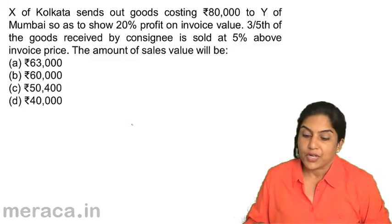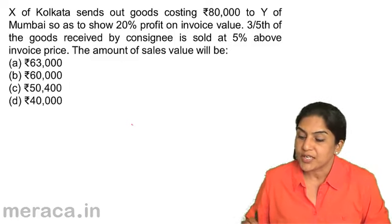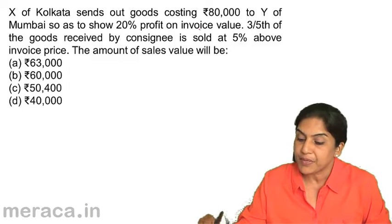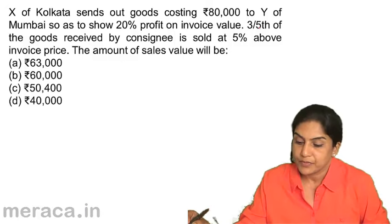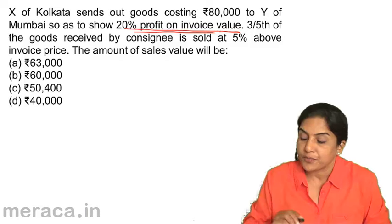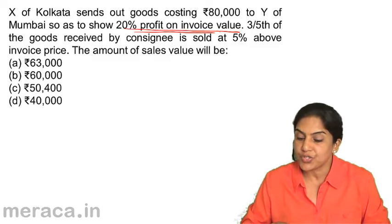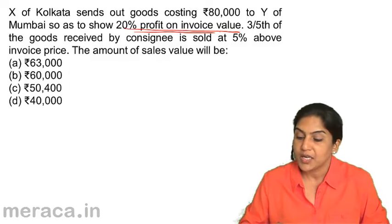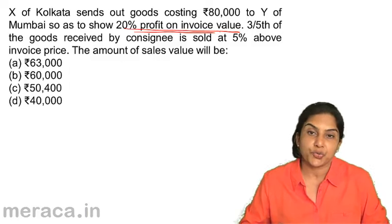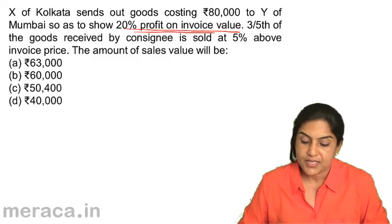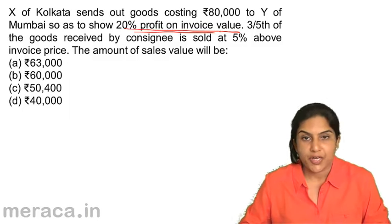X of Kolkata sends out goods costing $80,000 to Y of Mumbai so as to show a 20% profit on invoice value. Three-fifths of the goods received by the consignee is sold at 5% above invoice price. The amount of sales value would be: A) 63,000, B) 60,000, C) 5,400, and D) 40,000.